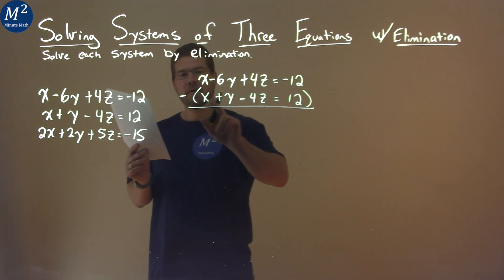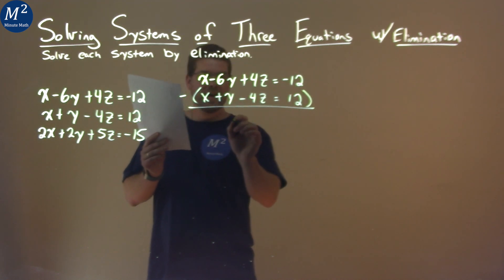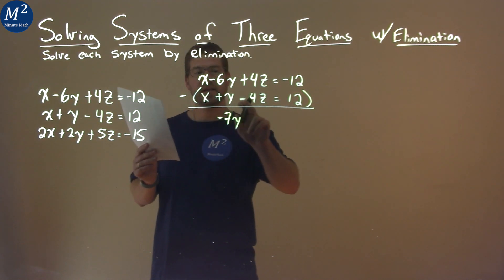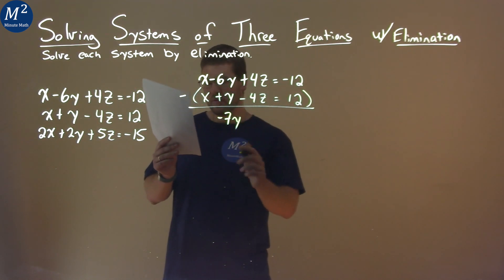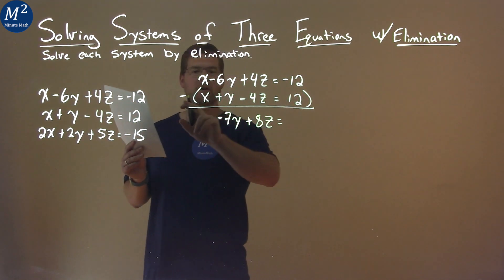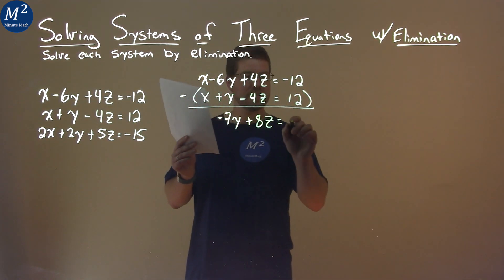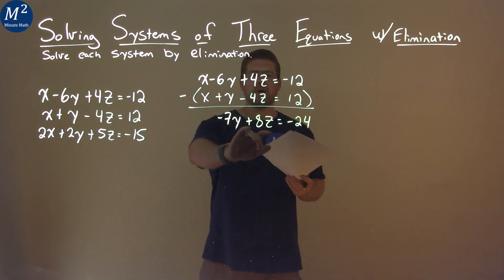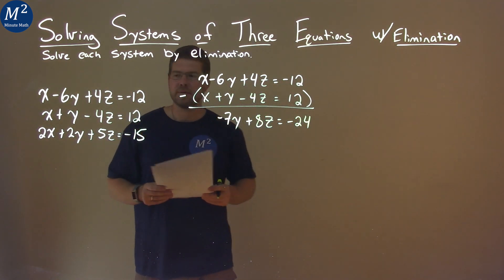Negative 6 minus 1y is negative 7y. 4z minus negative 4z is like adding 4z, so that's 8z. And negative 12 minus 12 is negative 24. All right. So we have one equation. We've eliminated a variable. We've got to do some more work.